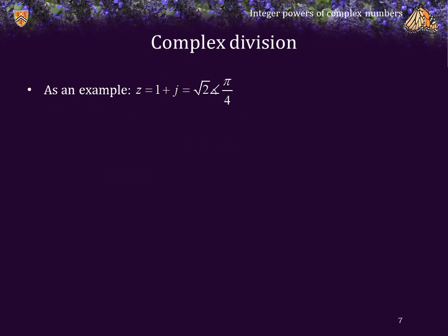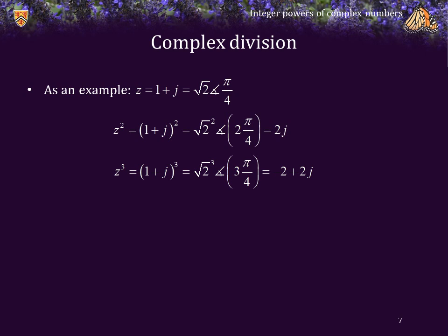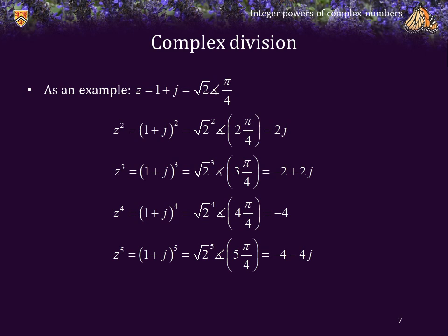As an example, if z is 1 plus j, which is root 2 phase pi over 4, then z squared works out to 2j. z cubed works out to negative 2 plus 2j. z to the fourth is negative 4, because the angle is 4 times pi over 4, which is pi — representing a negative number — and the magnitude is root 2 to the power 4, which is 4. So a negative number with magnitude 4 is negative 4. And z to the 5 is negative 4 minus 4j.